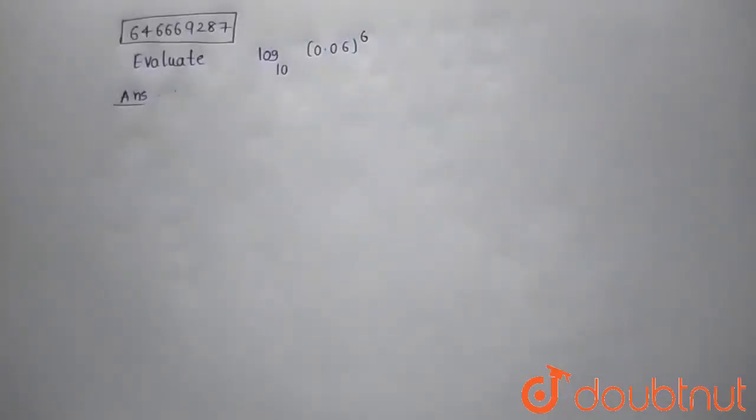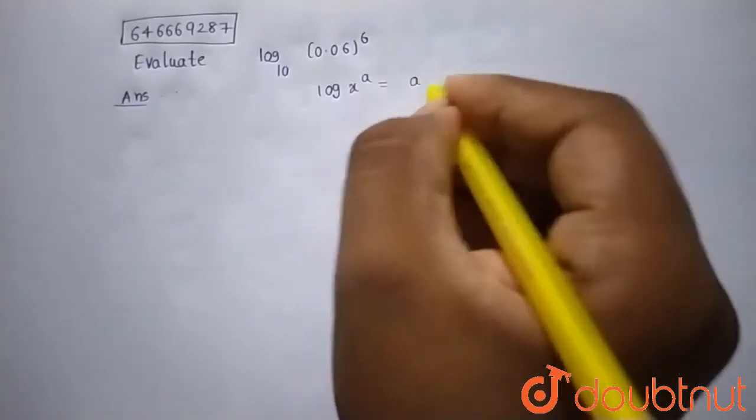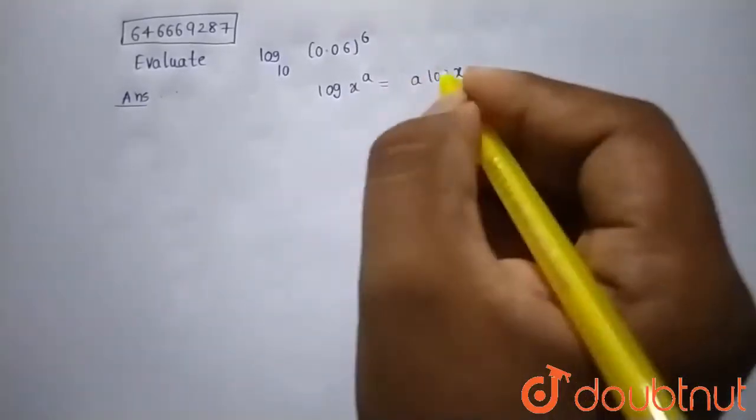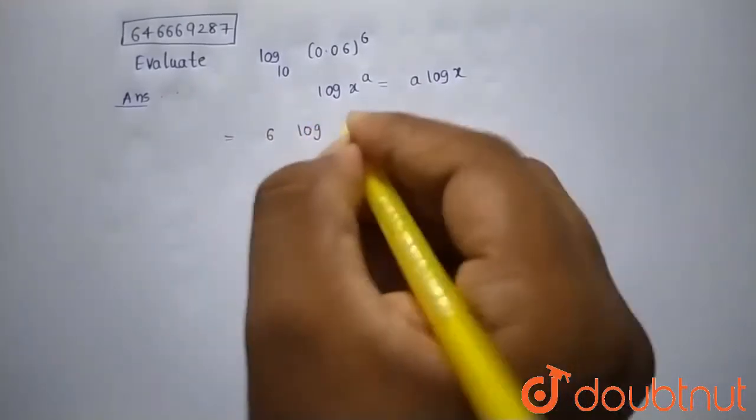evaluate log 0.06 power 6 to the base 10. Now we know that log x power a is equals to a log x. So by using this property I can write the given expression as 6 into log of 0.06 to the base 10.